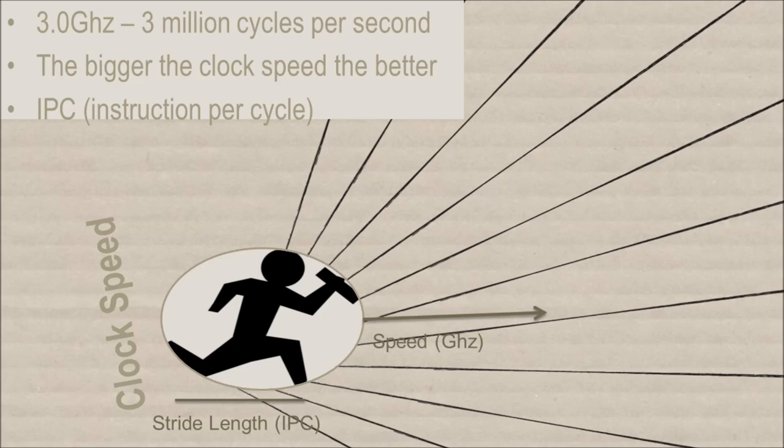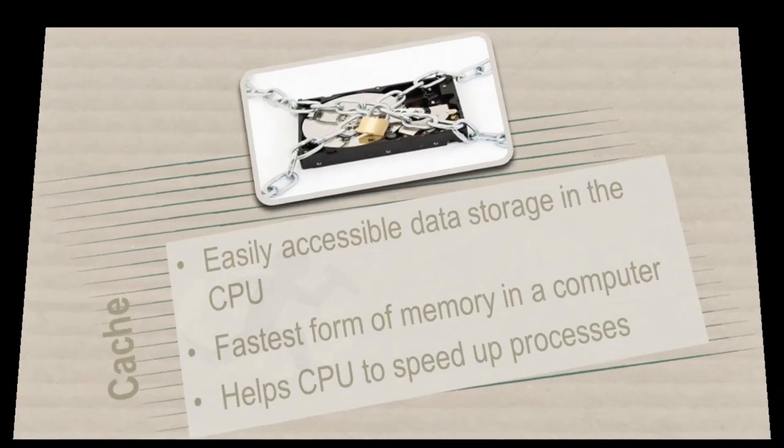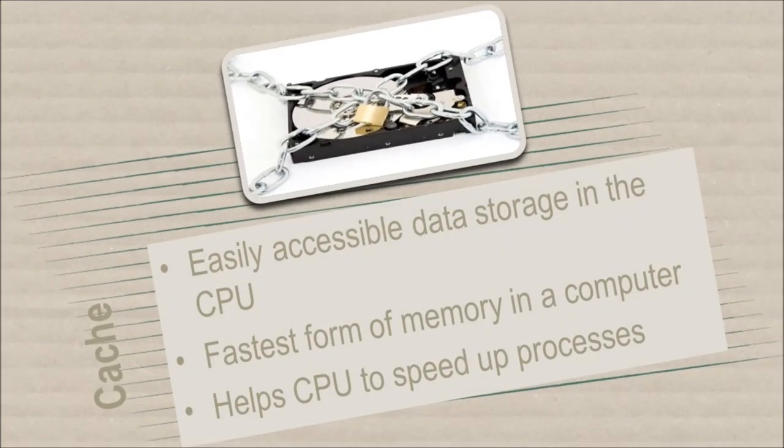Another concept of the processor is the cache. The cache is simple, ultra-fast, accessible memory in the processor. The cache stores data temporarily, which may be required from the CPU.